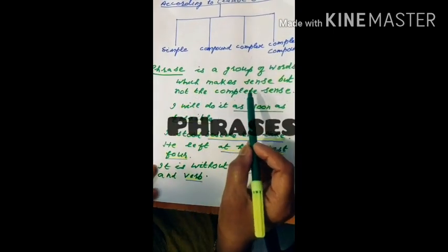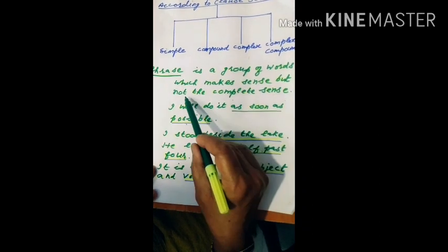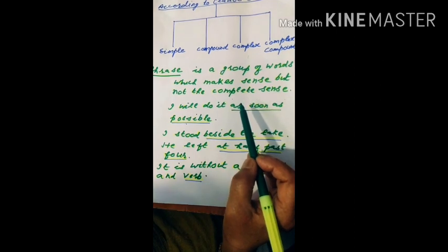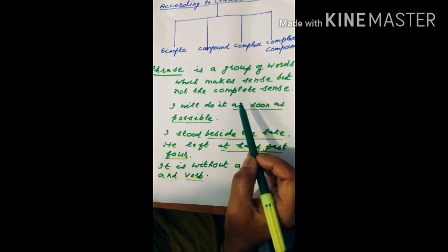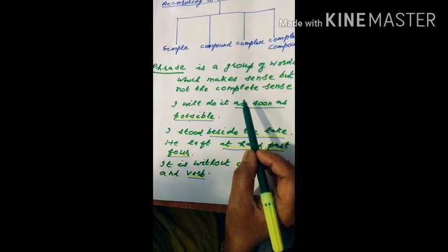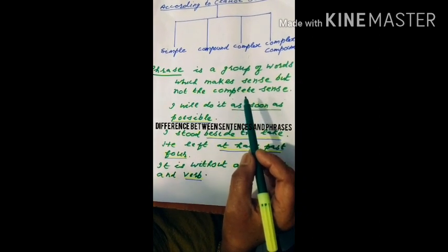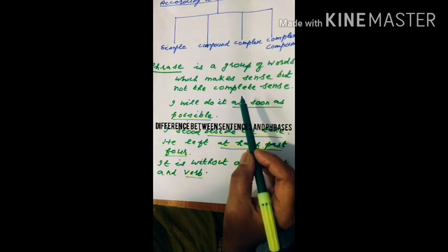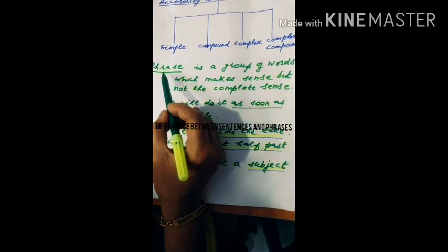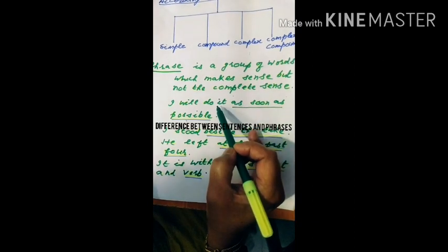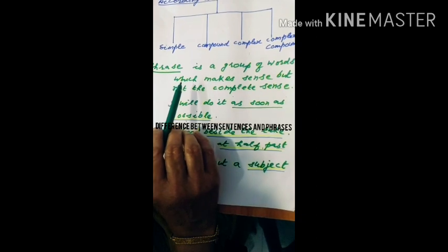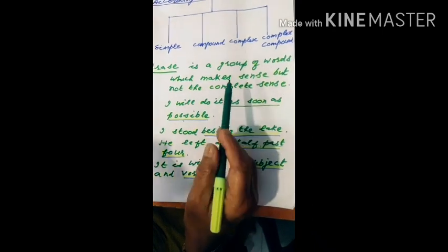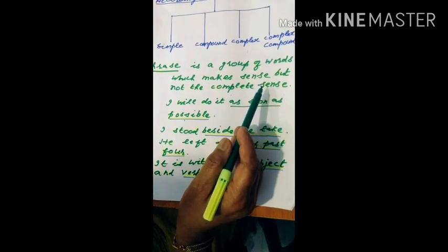Phrase. A phrase is a group of words which makes sense but not the complete sense. It does not possess a subject and a verb. You see, a sentence is a group of words which makes complete sense having a subject and verb. A phrase is also a group of words — it makes sense but not the complete sense, and it does not possess a subject and verb. So the only similarity is that both are groups of words.